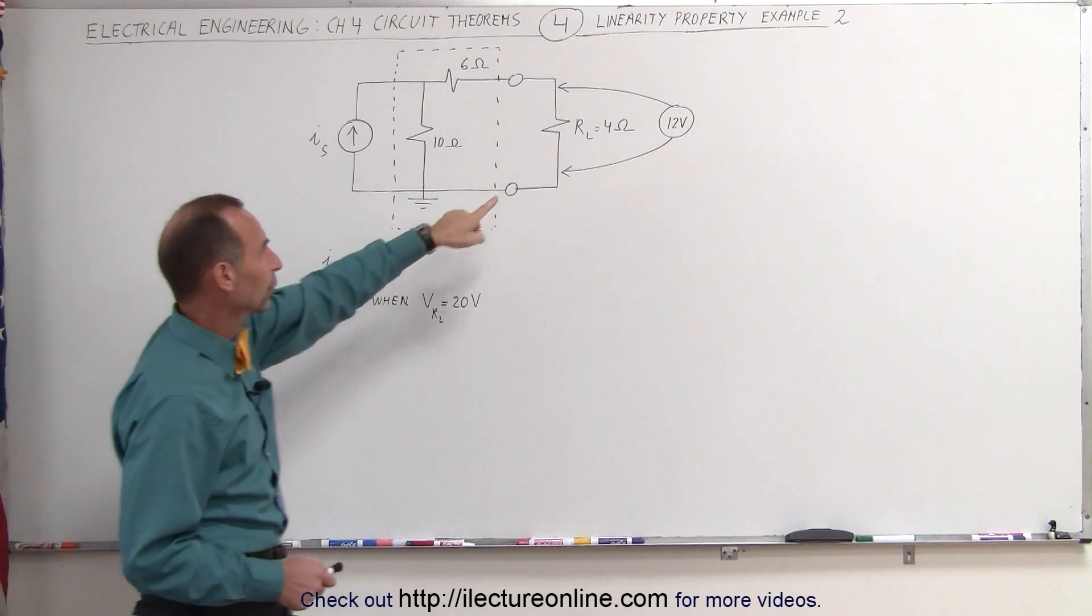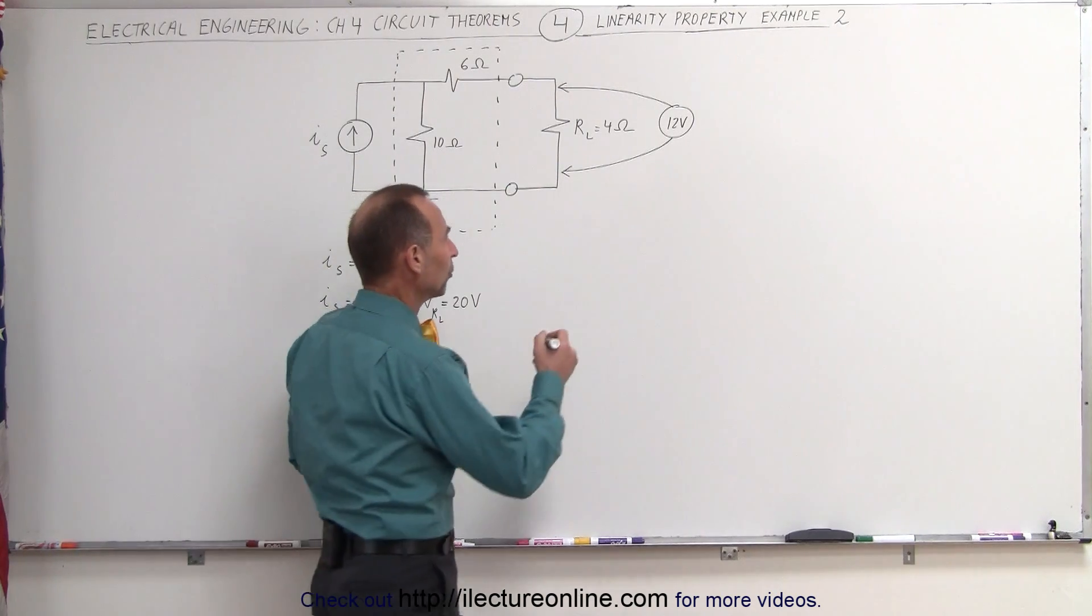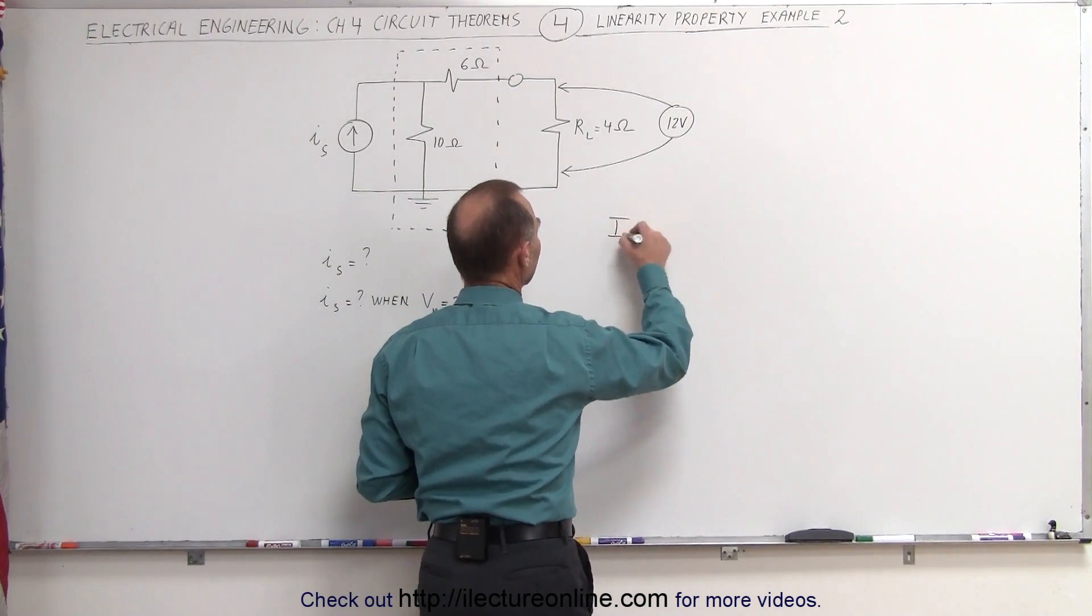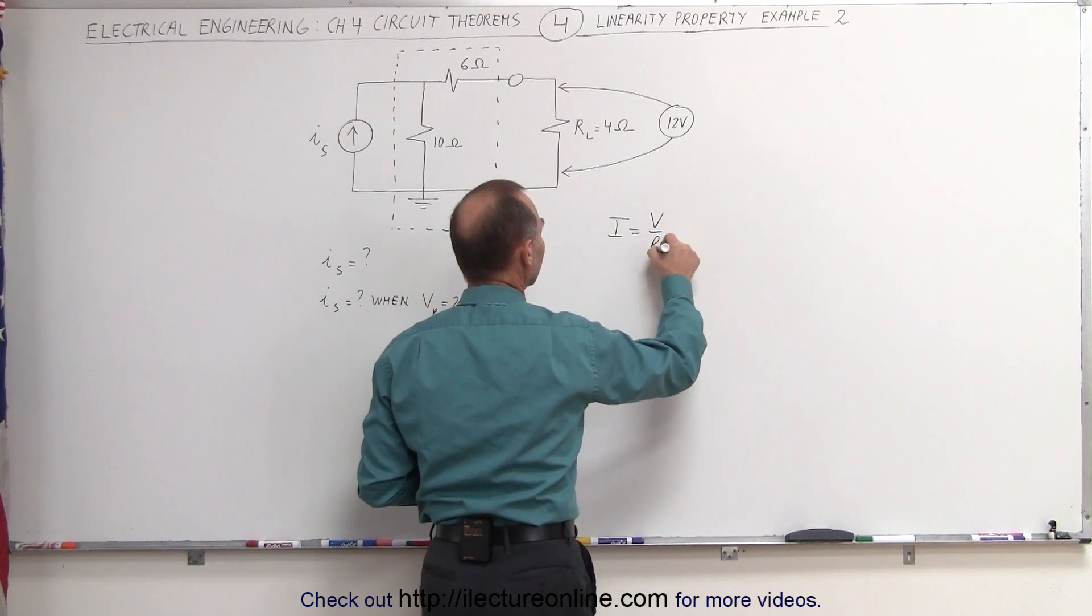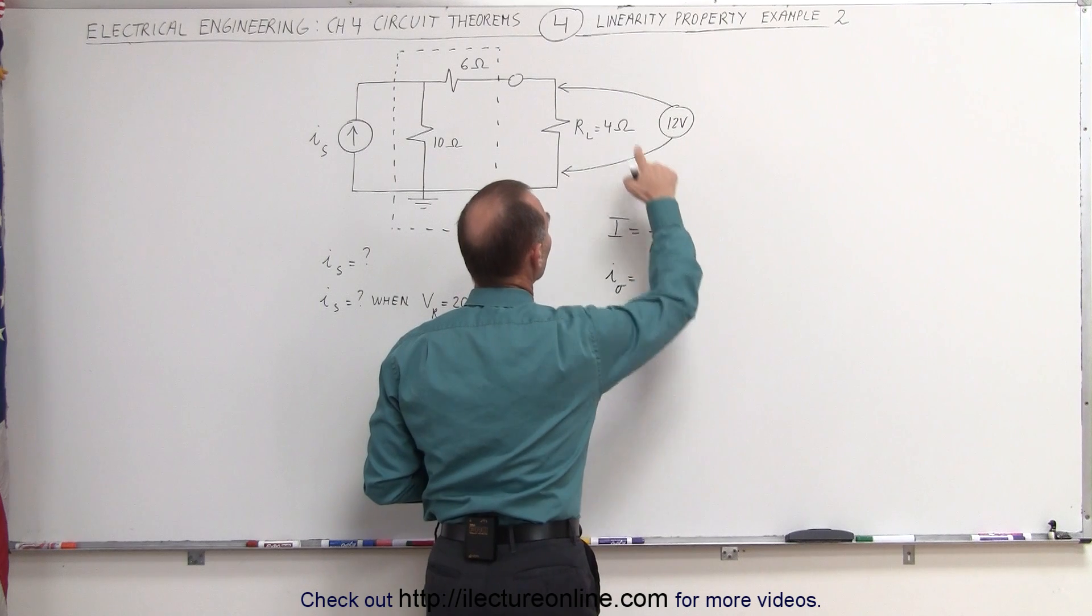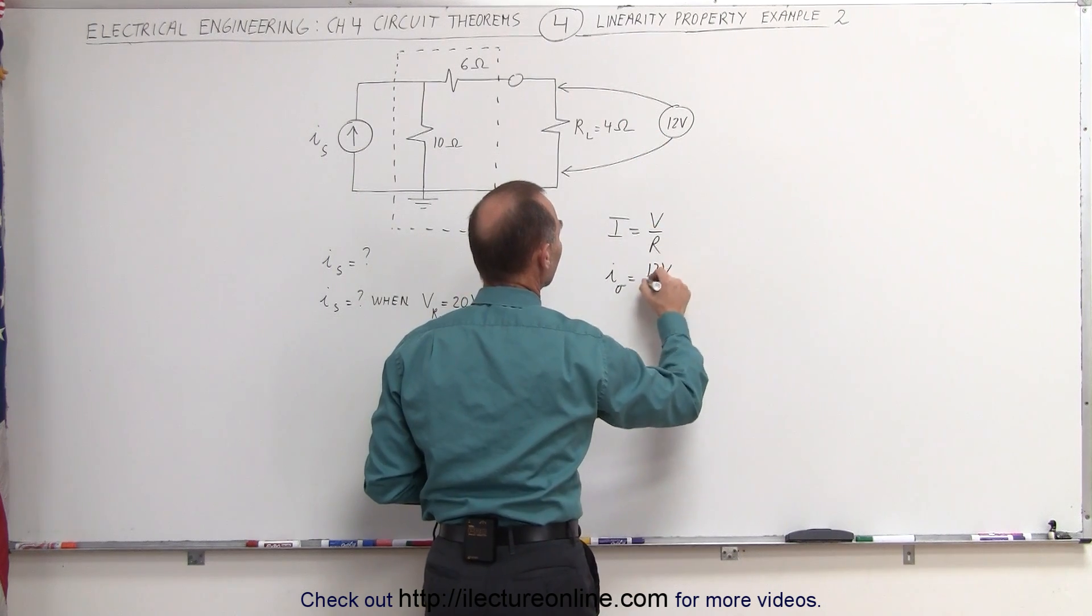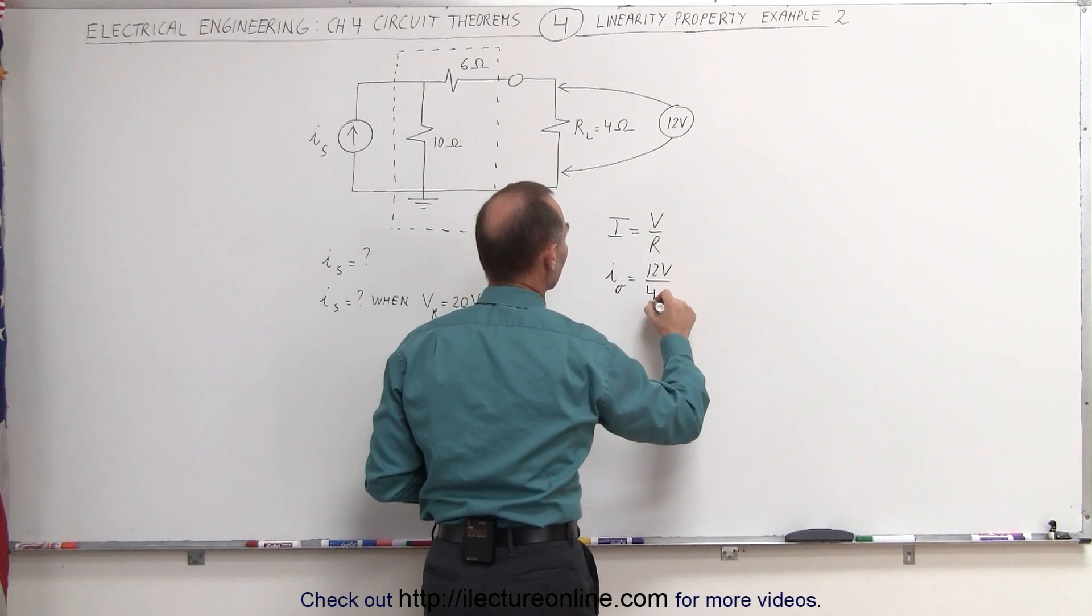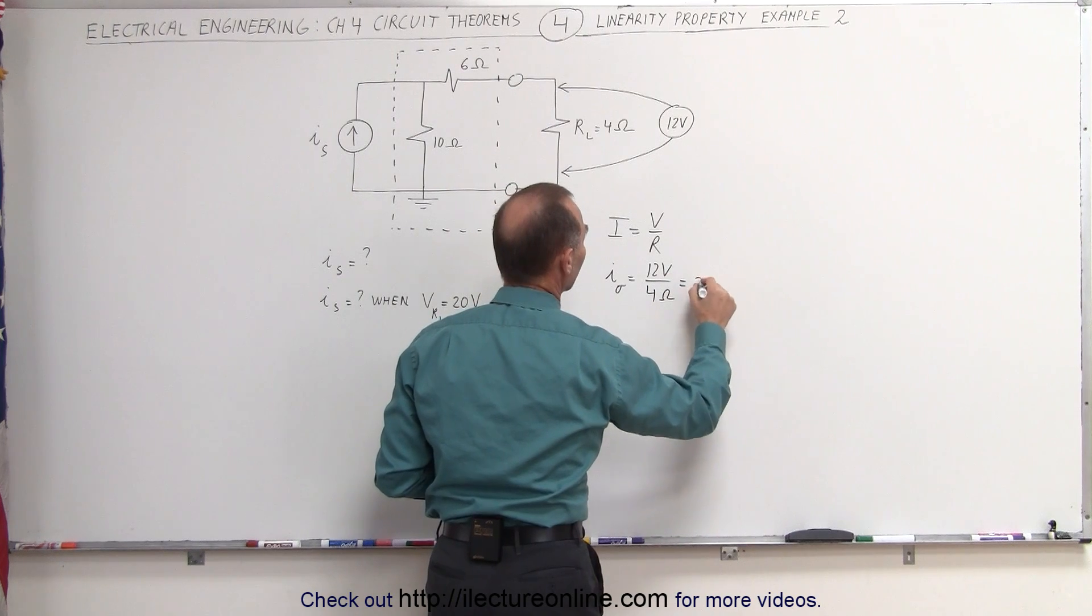Well, first let's find the current through the load resistor. Using Ohm's law, we know that I is equal to V divided by R. In this case, I on the output must be equal to the voltage across the output, which is 12 volts divided by the resistance, which is 4 ohms, and that would be equal to 3 amps.